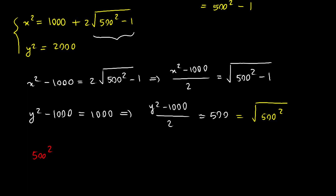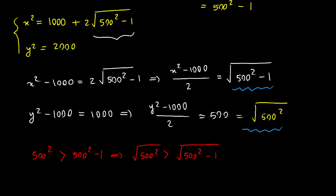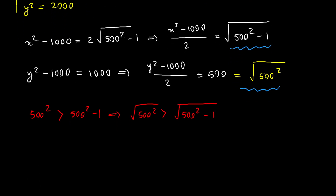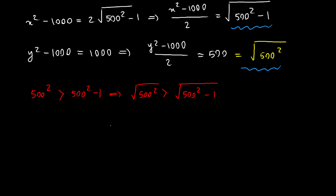It is obvious that 500 squared is a larger quantity than 500 squared minus one. Therefore, square root of 500 squared is greater than square root of 500 squared minus one. Looking at our equations, the right-hand side of the second equation is greater than the right-hand side of the first equation, so we can say the same about the left-hand sides.